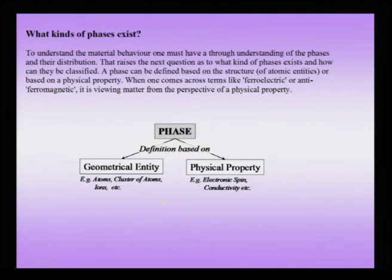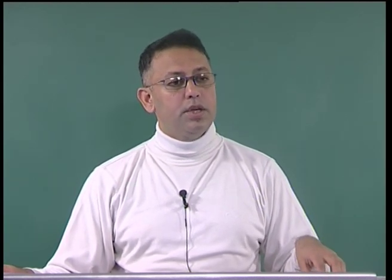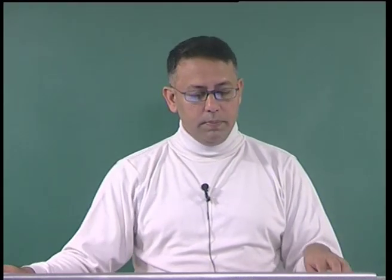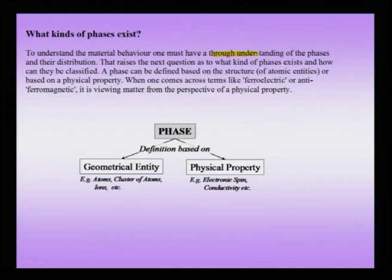In the previous discussion when we were trying to understand properties, one of the words we introduced was phases. We need to understand what is meant by a phase and further what is meant by the distribution of phases. To understand material behavior one must have a thorough understanding of phases and their distribution. So we raise the question: what kind of phases exist and how they can be classified for an easier understanding of the diverse kinds of phases which present themselves.